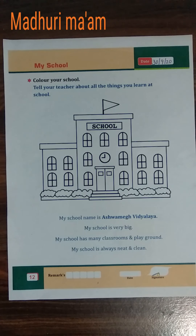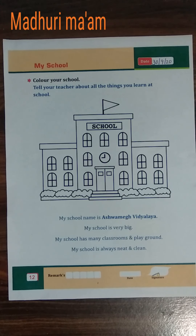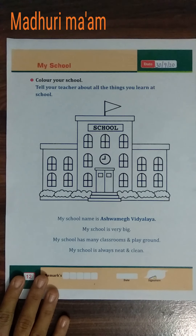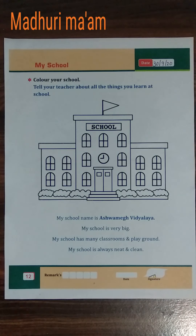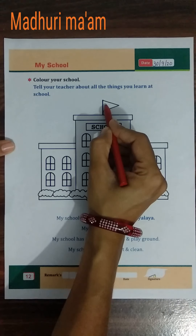So now aaj hum lugh kya karenghe — first we color in school pictures and then we learn about four lines of school. Hum lugh four lines school ke baare mein sikhenge. You have to learn these four lines.